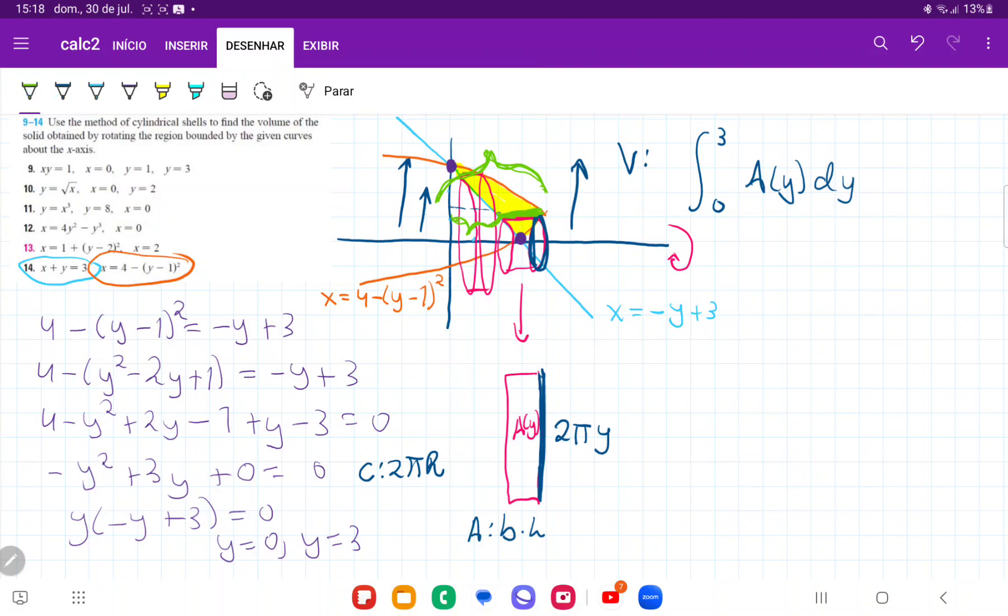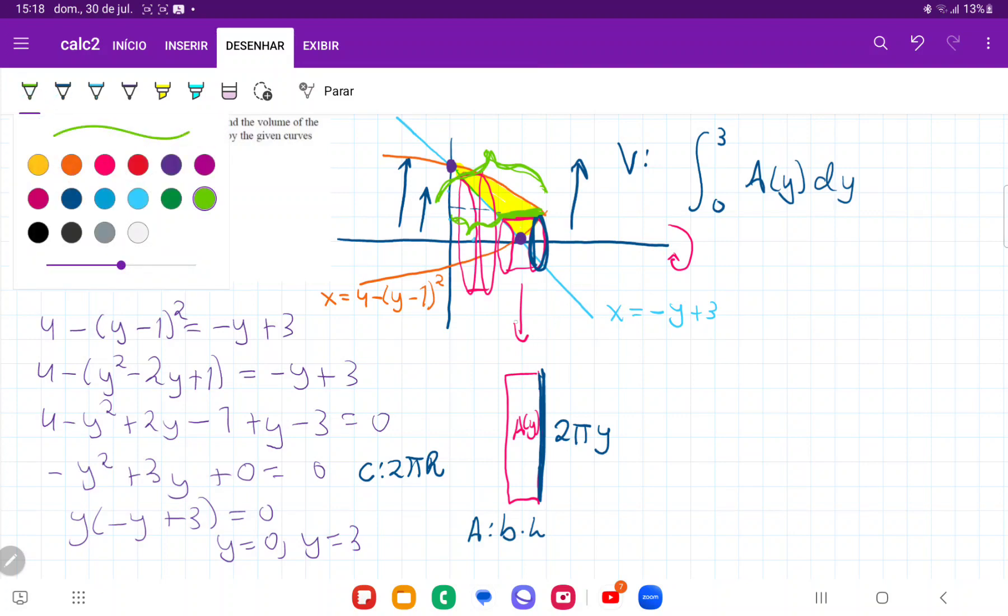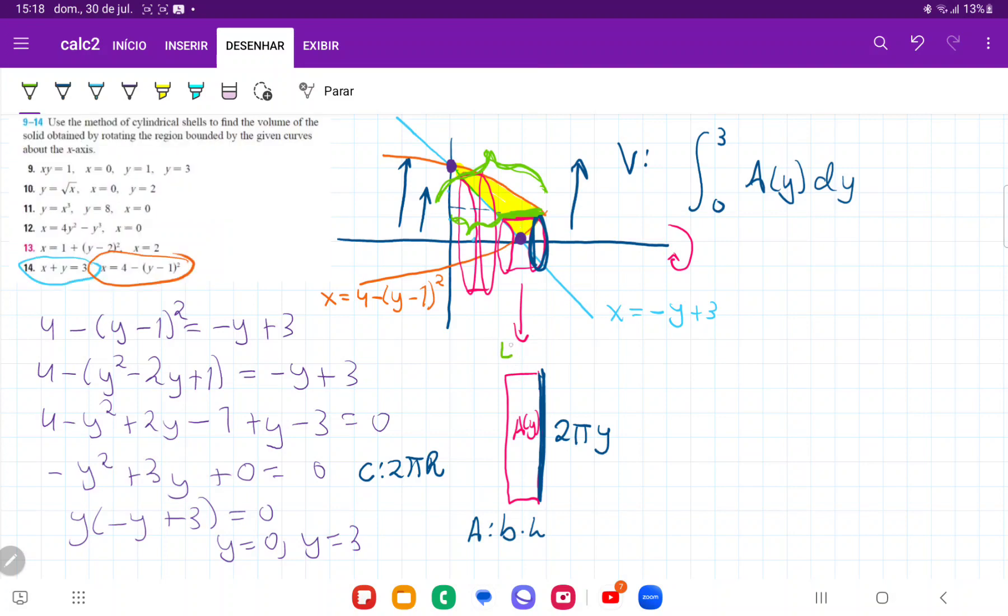So that difference is going to be the orange one. So the orange is 4 minus y minus 1 squared, and then minus minus y plus 3.